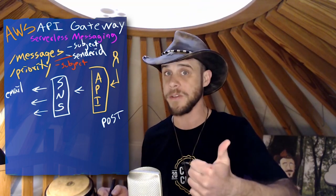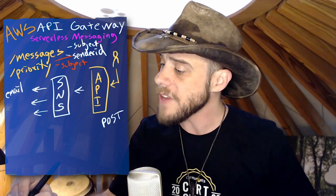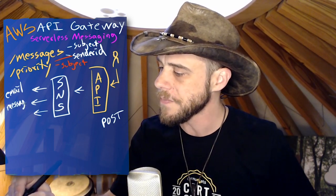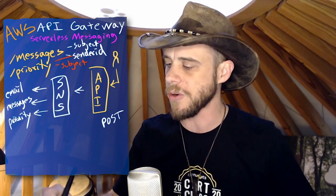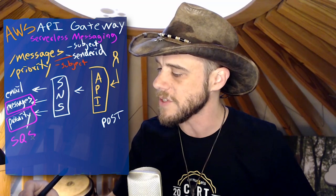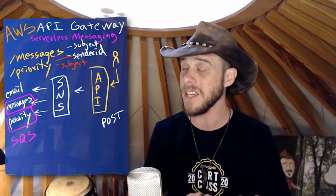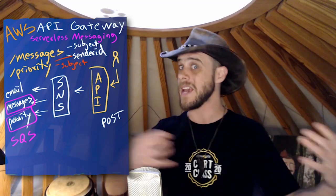The first one is that we will be able to send an email using this particular message relay system — it'll send an email to the person who sent in the message, as long as you provide the correct sender ID. After that, it's going to put it into the messages queue. And if you send a priority message, then it would go into the priority queue as well. Both messages and priority are SQS queues that I've built in the background.